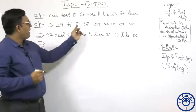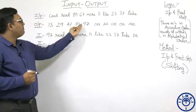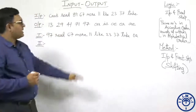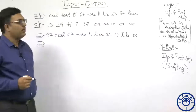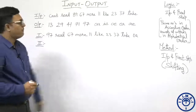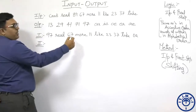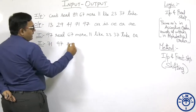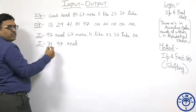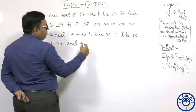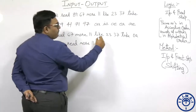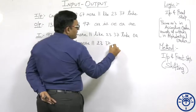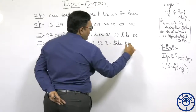Coming to step 2: the next pair is 71 and IE. 71 comes before 97, so it is put first. IE comes after OA, so it is put last. IE comes from 'like', so like should not be repeated in step 2. 71 comes from 67, so 67 should not repeat either. Step 2: 71, 97, read — 67 is ignored — more, 11, 23, 37, take, OA, IE.